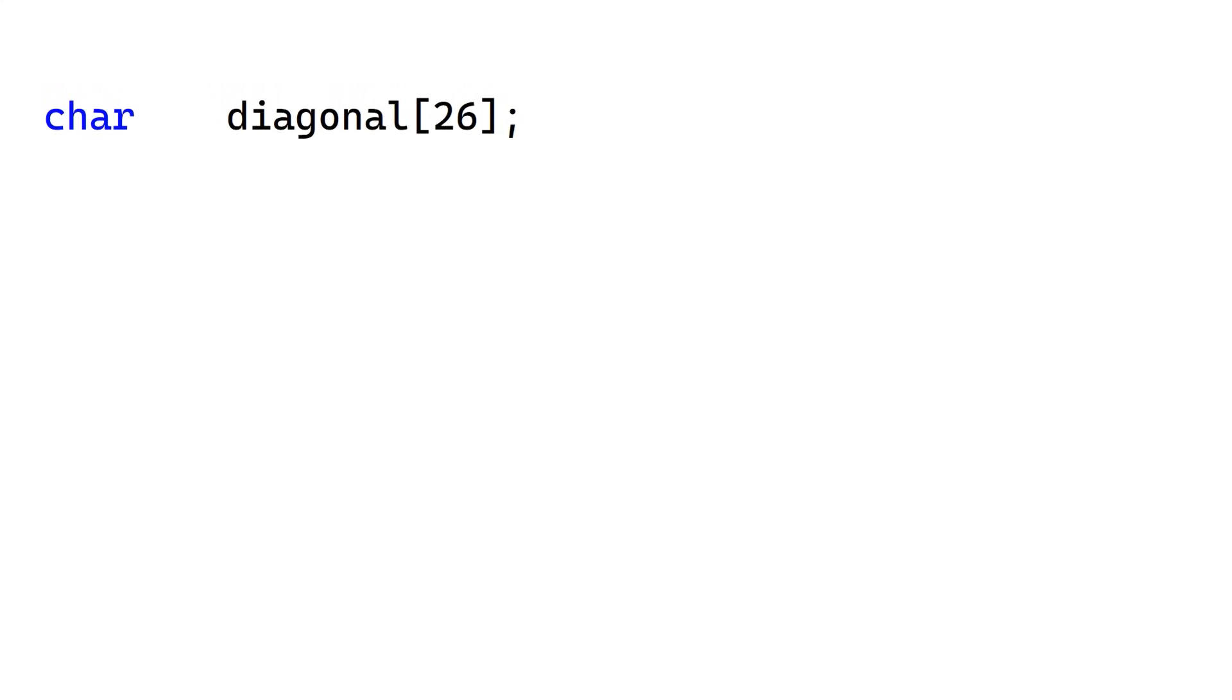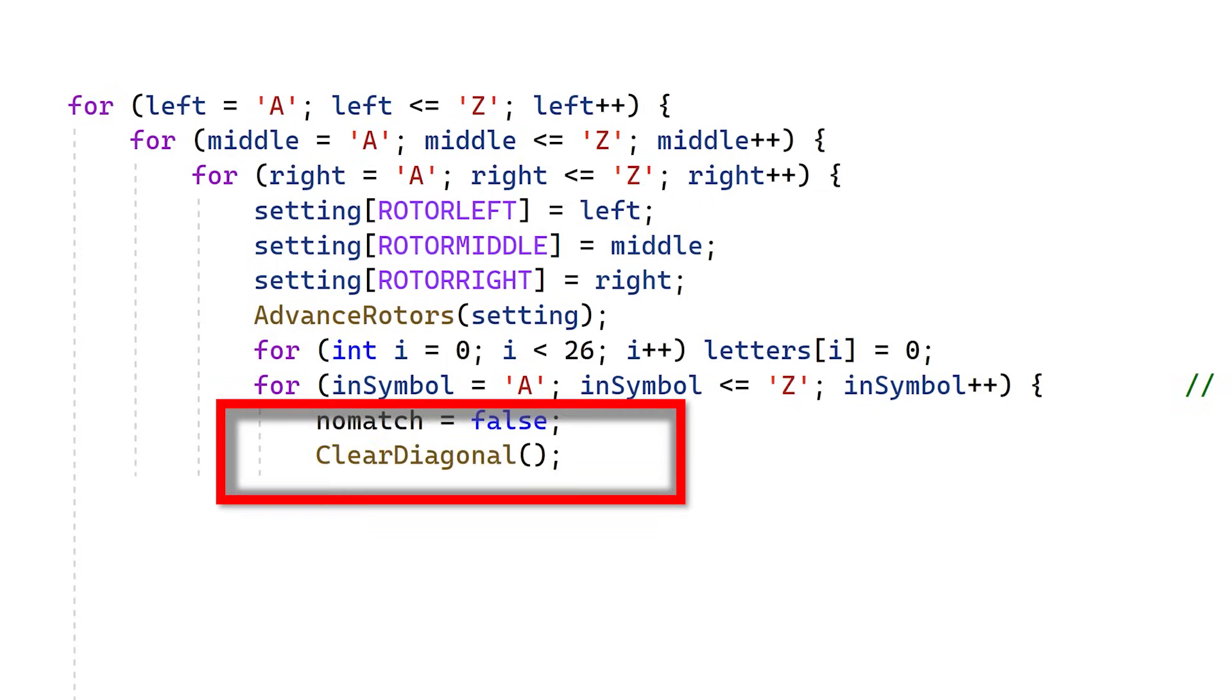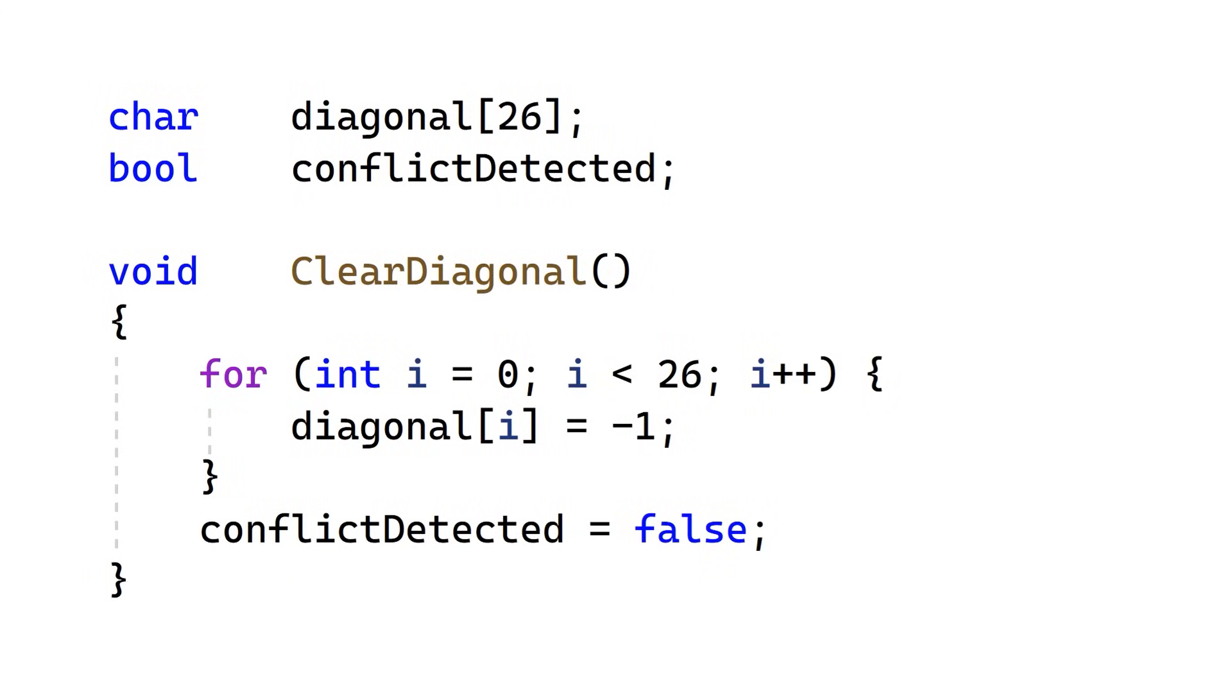I'm going to add this one-dimensional character array, which tells us what any given character maps to on the plugboard. I'm going to set up this global variable called ConflictDetected. For each possible new rotor setting and key character mapping, I call a routine called ClearDiagonal. This sets each character mapping to be minus 1 and sets ConflictDetected to be false.